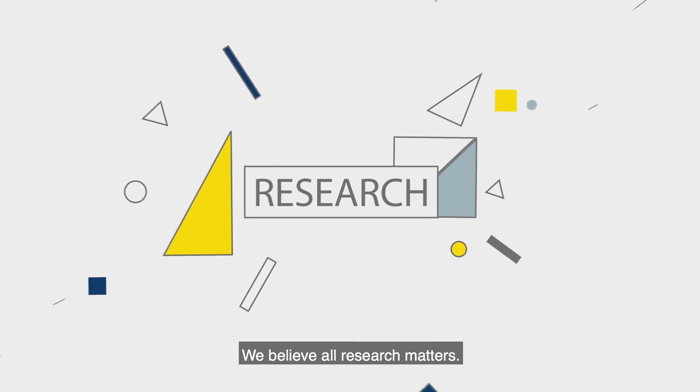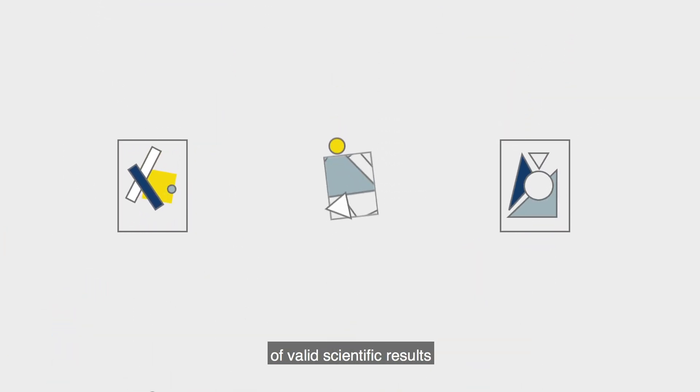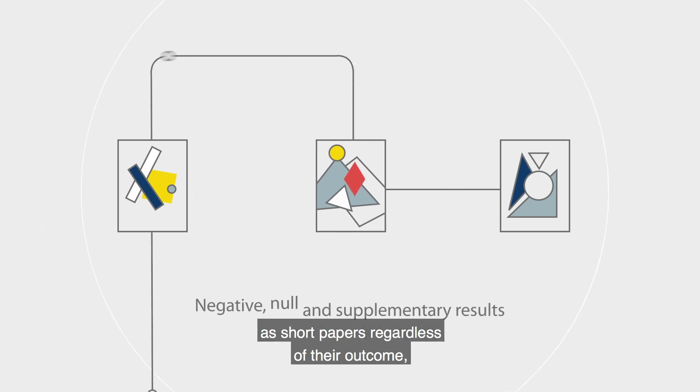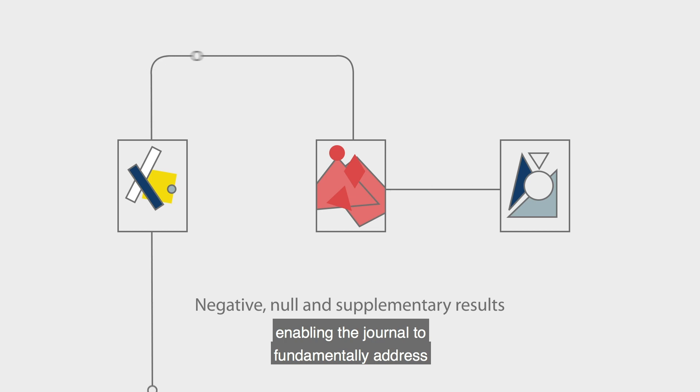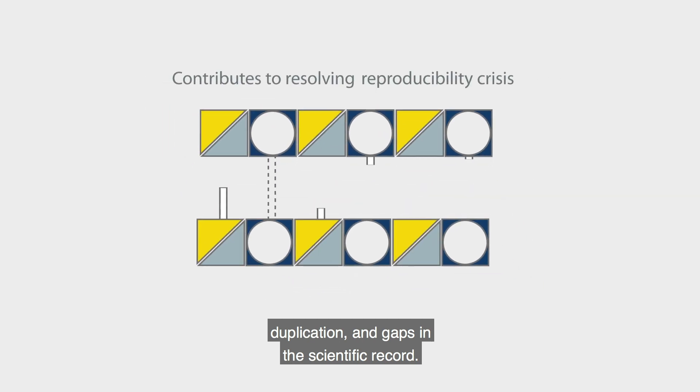We believe all research matters. Experimental Results allows the publication of valid scientific results as short papers, regardless of their outcome, enabling the journal to fundamentally address the growing issues of reproducibility, duplication, and gaps in the scientific record.